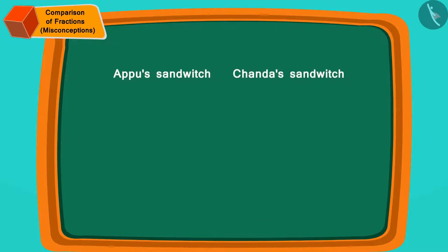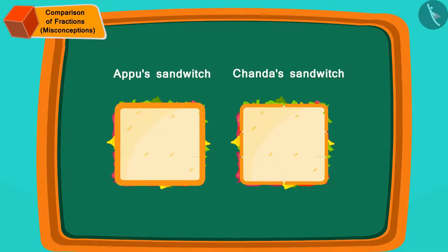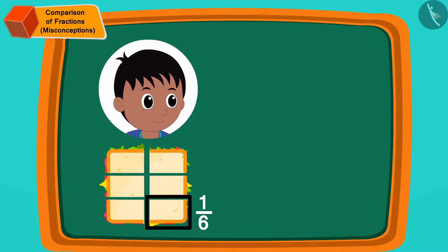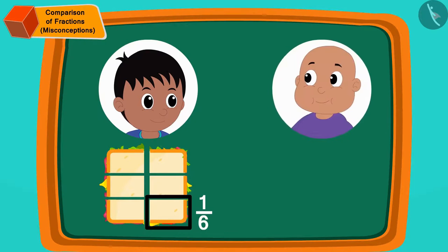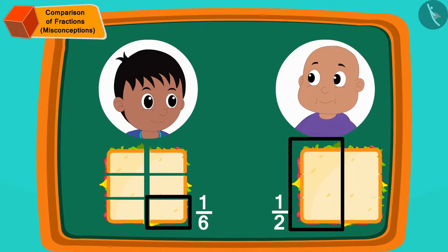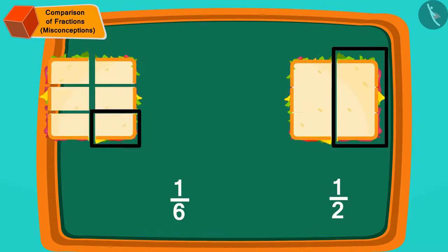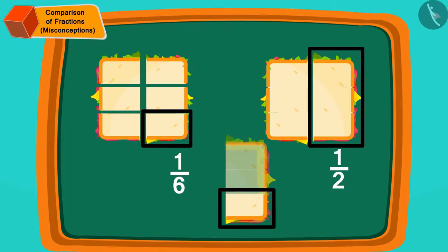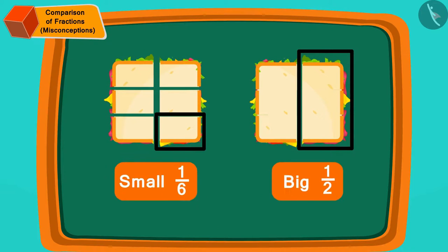Appu and Chanda's sandwiches are exactly the same size. If we put Raju's piece on Bablu's piece, we will find that Raju's piece is actually much smaller than Bablu's piece. But why did it happen?